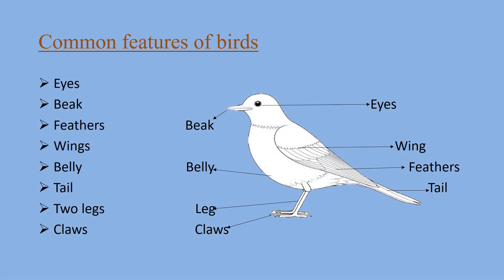Now see this picture — you will get a clear idea about the common features of birds. A bird has a beak, eyes, wings, feathers, belly, legs, claws, and a tail. Is it clear now?